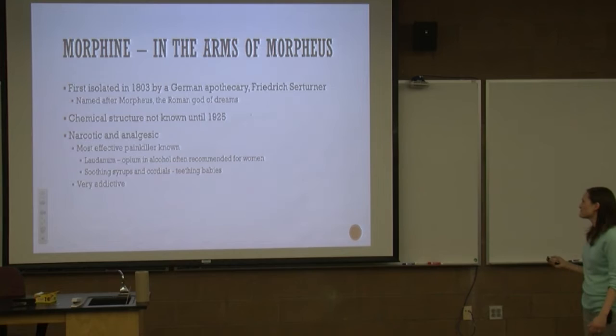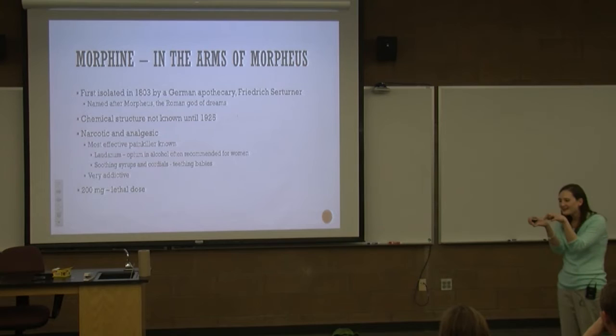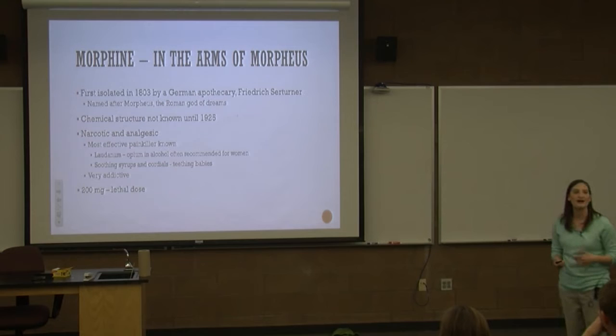The more powerful a pain reliever it is — morphine being the most powerful — the more addictive it is. Here is the toxicity: the lethal dose is 200 milligrams, so that's only 0.2 grams — just a tiny little pile of powder. That's the lethal dose for an average adult, so babies would be much smaller.